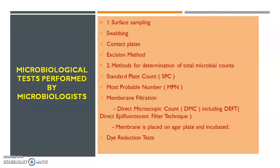The next point covers microbiological tests performed by microbiologists in the food industry. Surface sampling methods include swabbing, contact plates, and excision method. Methods for determination of total microbial counts include standard plate count, most probable number, and membrane filtration method, which includes direct microscopic count (DMC) and direct epifluorescent filter technique (DEFT). The membrane is placed on an agar plate and incubated. Another test is the dye reduction test.